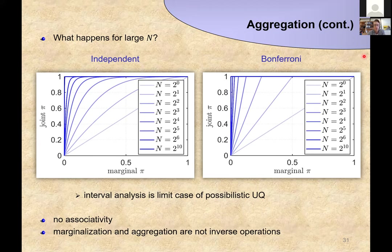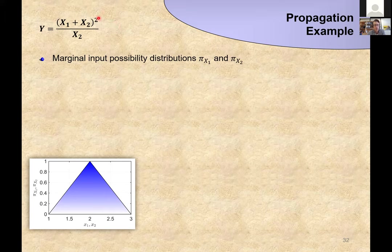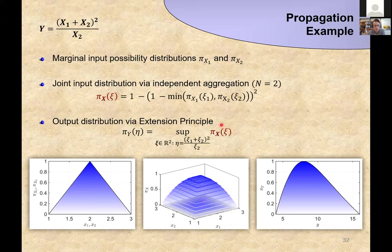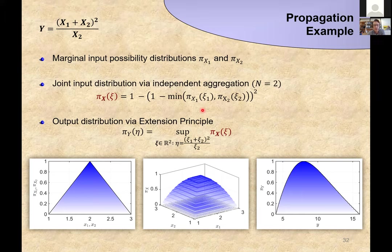Here's an example: we want to compute Y given a function of x_1 and x_2, with marginal input possibility distributions as two triangular fuzzy numbers. We compute the joint distribution using the independent aggregation for n=2, then plug this into the extension principle to compute the output. If you remember Zadeh's extension principle, he would have written the minimum of the individual possibilities here — it's a slight nonlinear rescaling of what Zadeh's extension principle gives you.